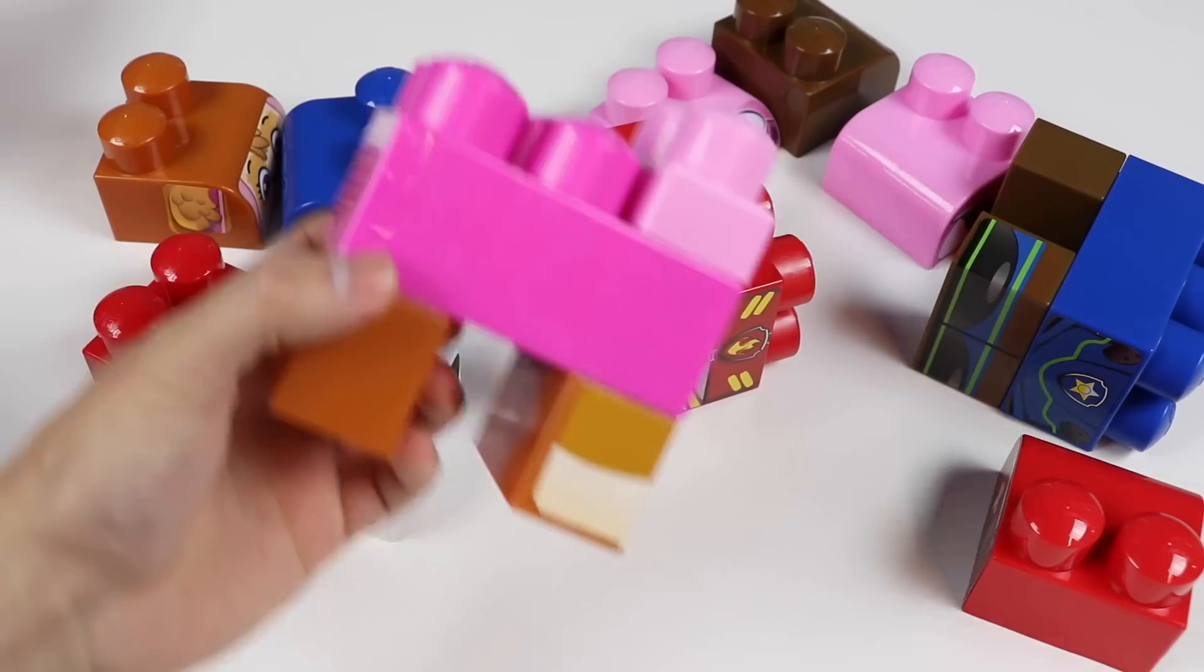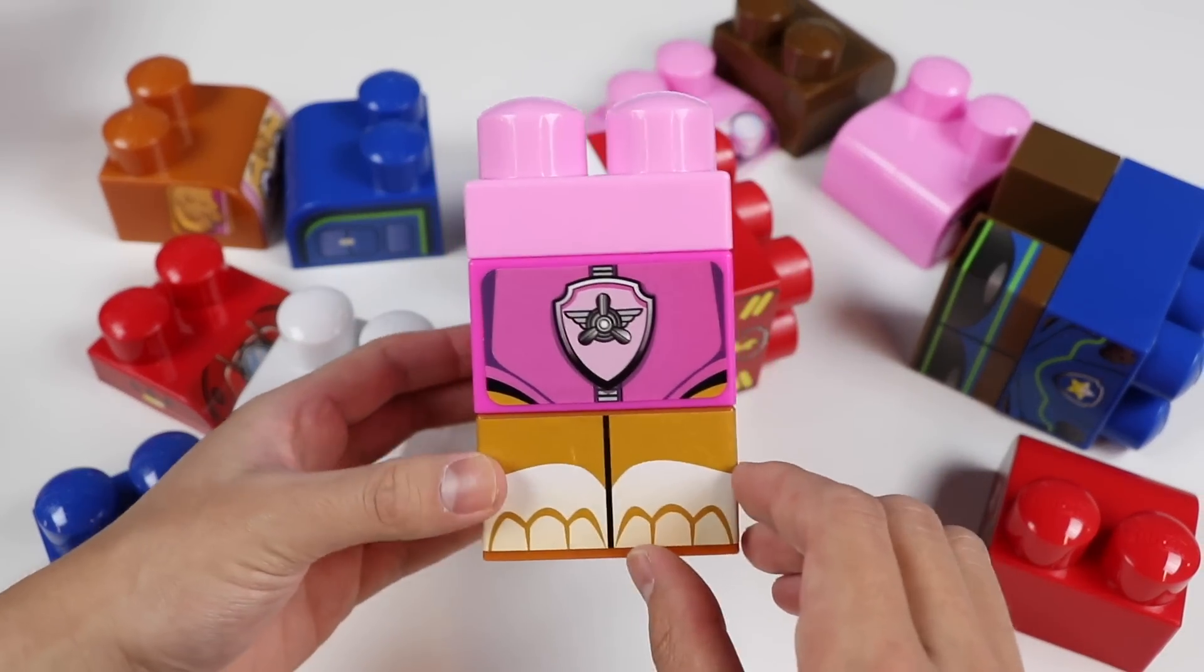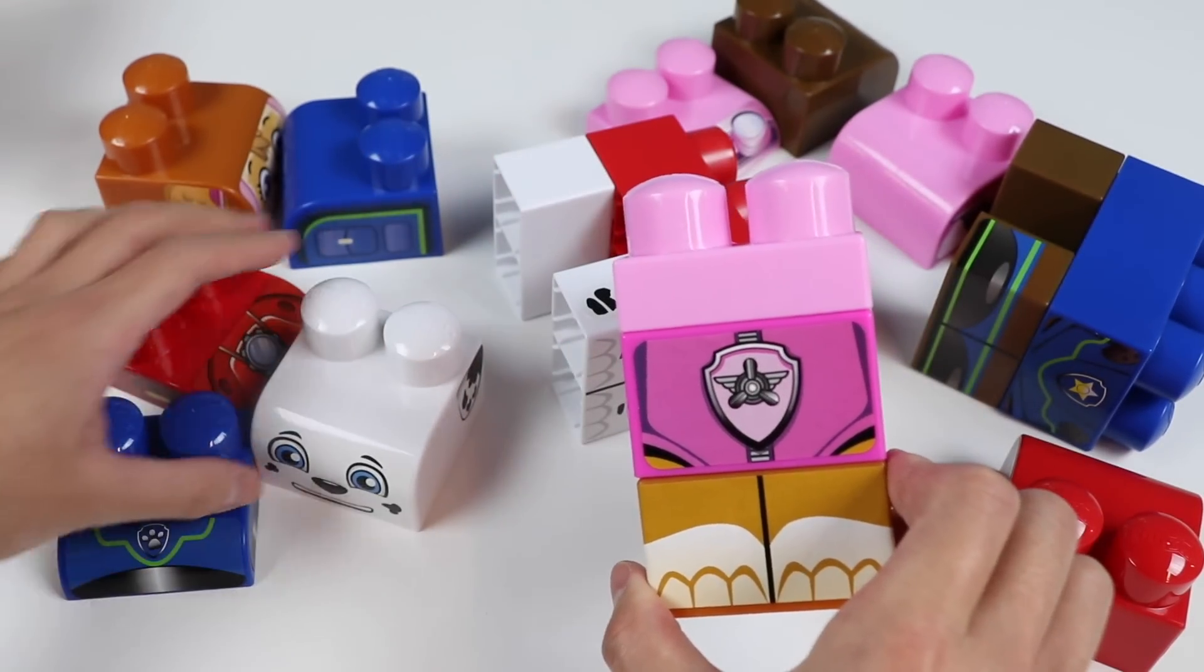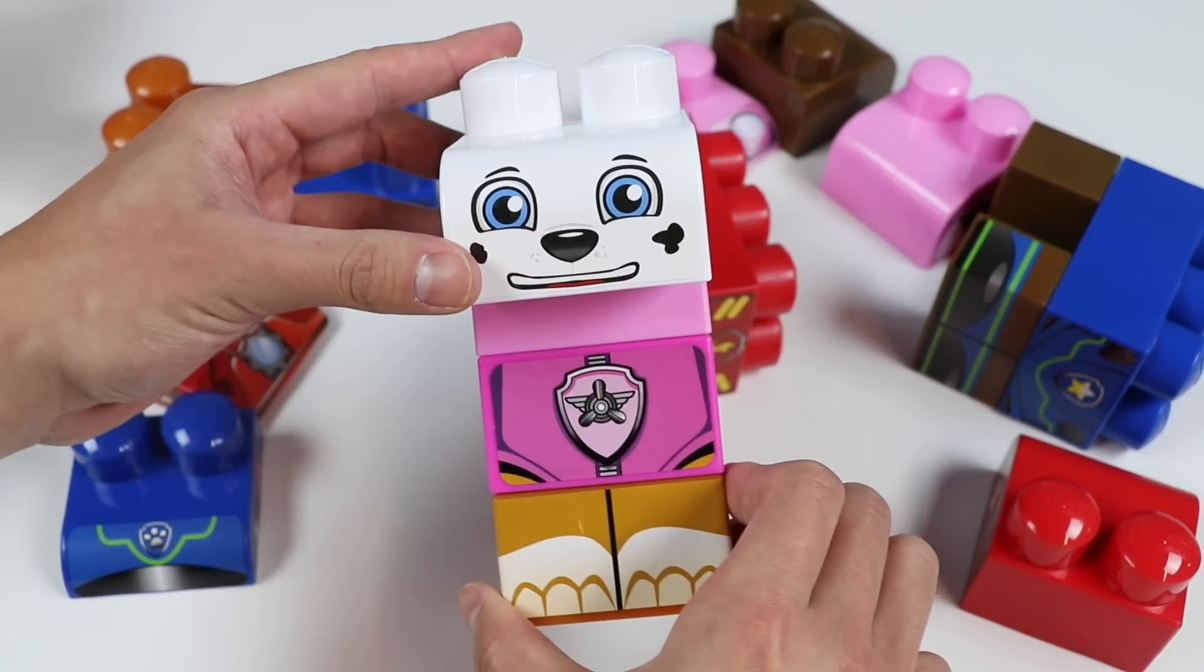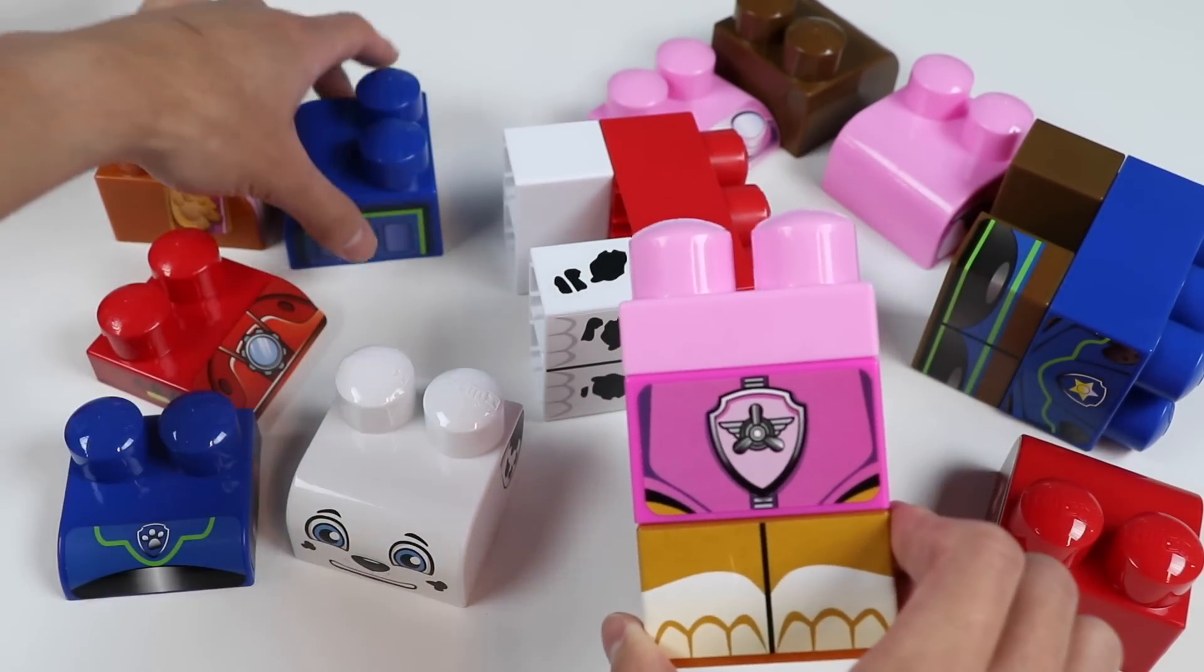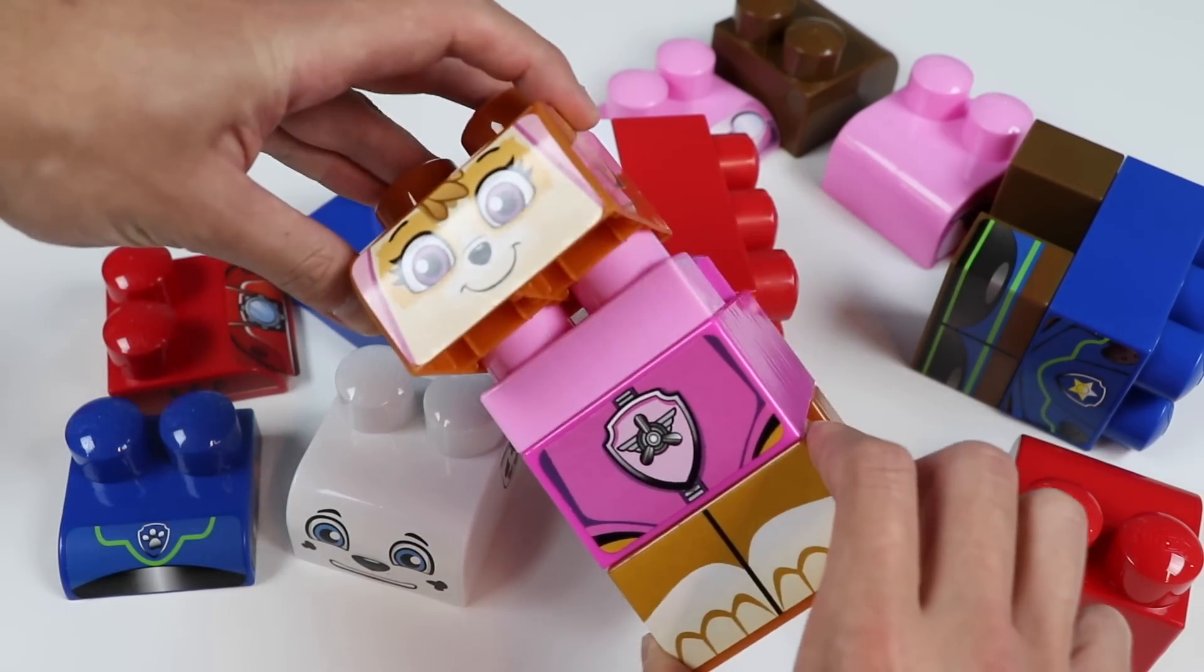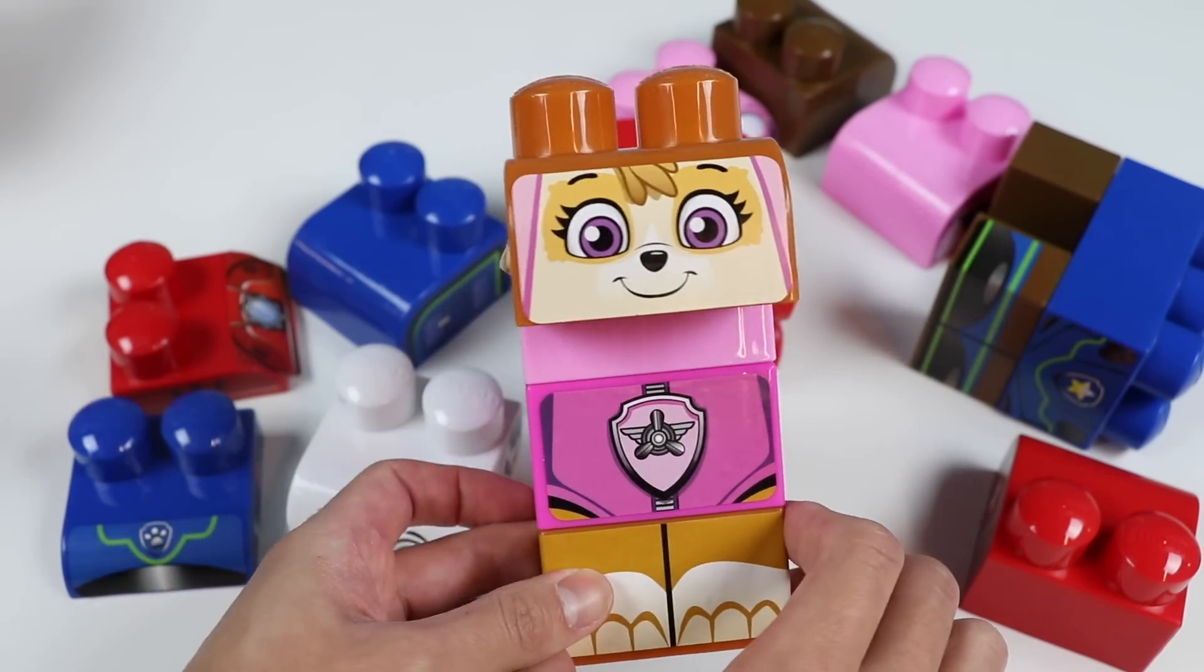Let's keep putting our Paw Patrol friends back together. Now we have a Paw Patrol member's body with a pink outfit and brown legs. Let's match the face first! Is it this? Nope! The colors are a little off. How about this one? Nope, that's not a face. Then this? Oh, we got a match! It's Skye, the flying pup! Hang in there, Skye!